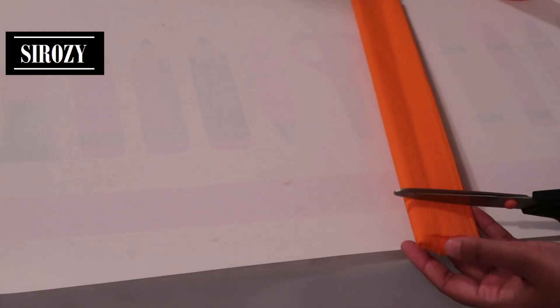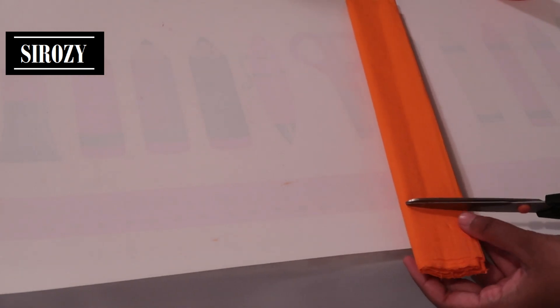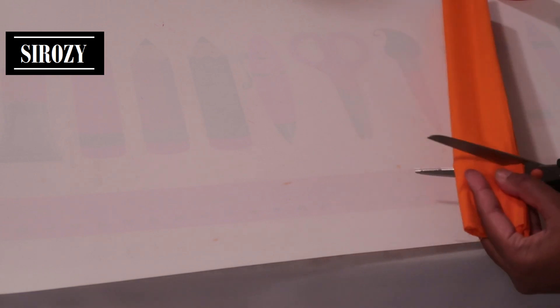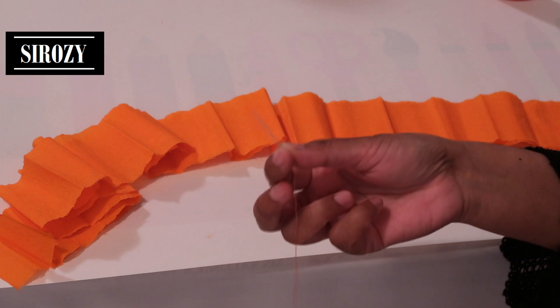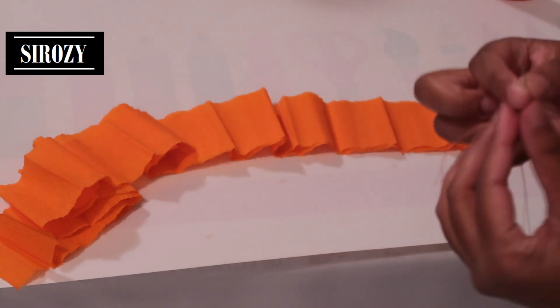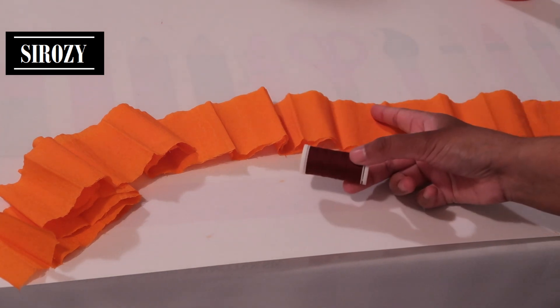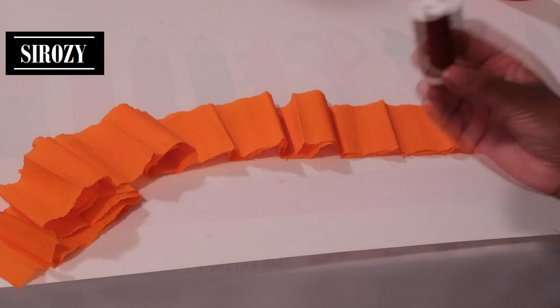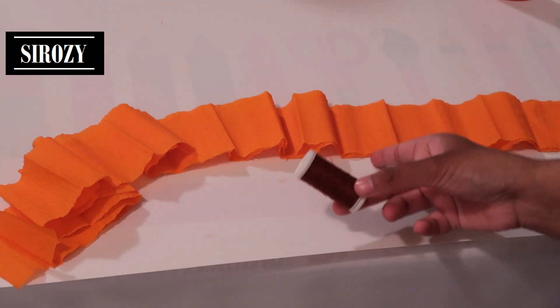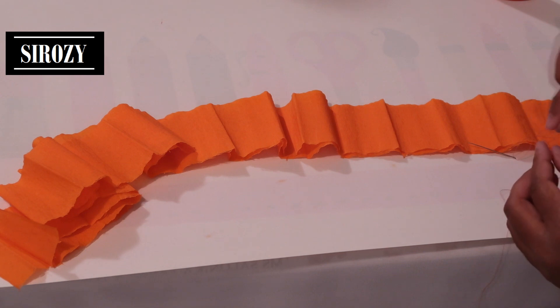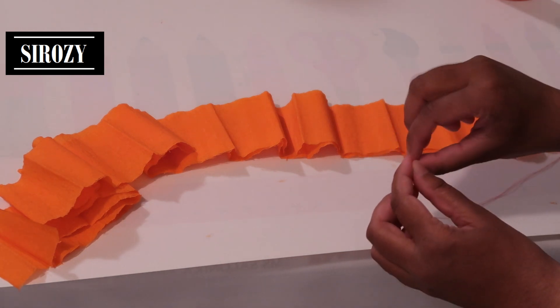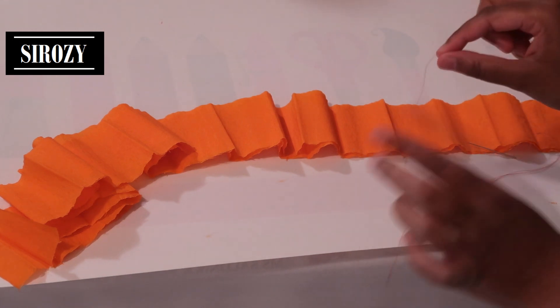Now again, I'll keep the width at about four centimeters for this one. And the length will be about one meter. Now for the second method, you'll be needing a needle and thread. You have to choose a color that matches your crepe paper. I don't have the same color at this moment, so I'll be using a color that matches it. I don't have any other color that suits it much more, so I took brown.